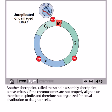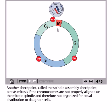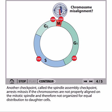Another checkpoint called the spindle assembly checkpoint arrests mitosis if chromosomes are not properly aligned on the mitotic spindle and therefore not organized for equal distribution into daughter cells. This is really important because if the spindle assembly is not properly made, chromosomal segregation will not occur properly. As a result, one daughter cell would end up with a higher chromosome number while the other would have none, creating asymmetry. In mitosis, we always require the same number of chromosomes in daughter cells as in the mother cell.